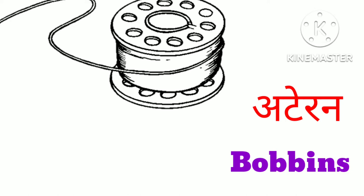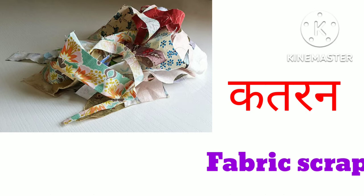Next are 'atiran' — called 'bobbins.' And 'kapde ki jo katran hoti hai usse hum kaengi fabric scrap' — fabric scraps.